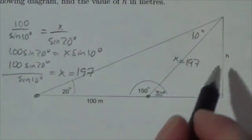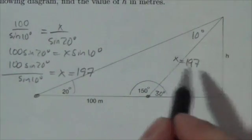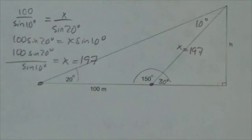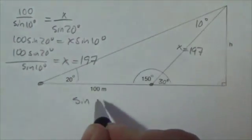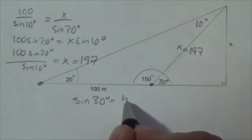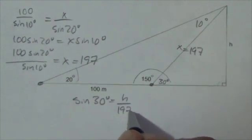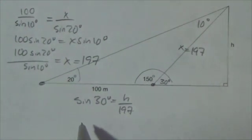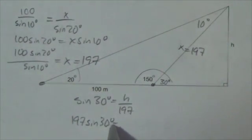I know this angle, I'm looking for the side opposite that angle, and I have the hypotenuse. Well, that's perfect for sine. Sine of 30 degrees is going to equal h over the hypotenuse, 197. So I cross multiply. 197 times the sine of 30 degrees is going to equal h.